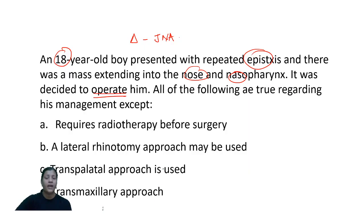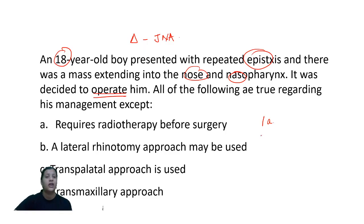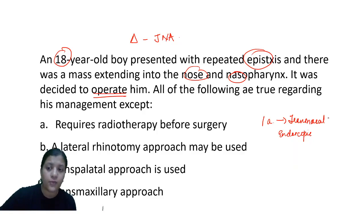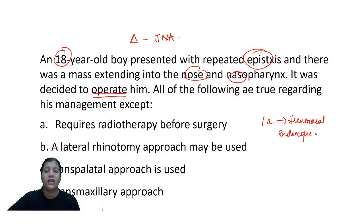The diagnosis here is juvenile nasopharyngeal angiofibroma. When there is extension into the nose or nasopharynx, this is stage 1A as per Radowski staging. For JNA stage 1A, you can use any of the surgical approaches. Most often what we use now is a transnasal endoscopic approach. Transnasal endoscopic approaches have come about 25-30 years ago. Before that, various other techniques were used for treating JNA located in the nose and nasopharynx.